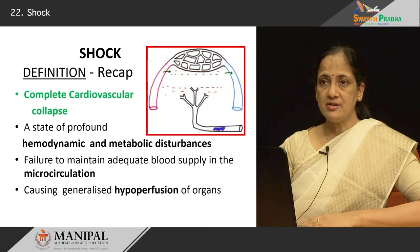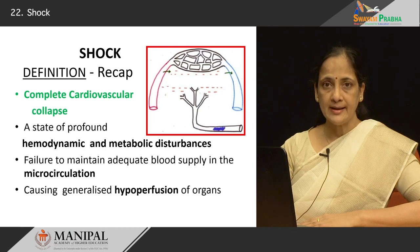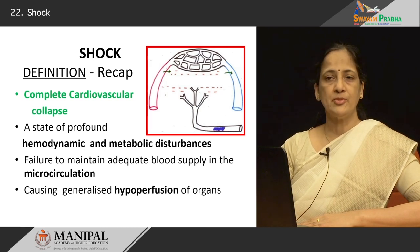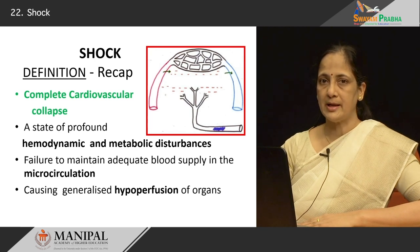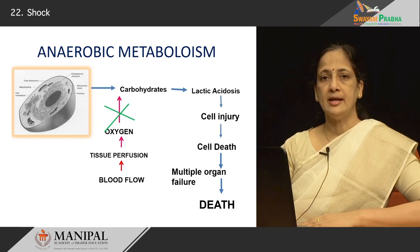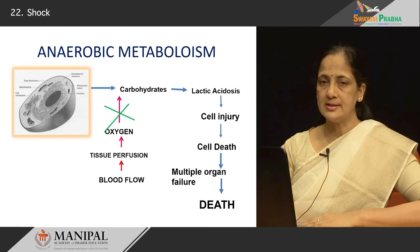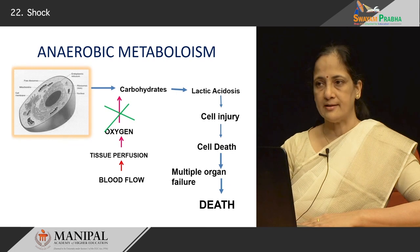Let us recap the definition of shock. There is complete cardiovascular collapse — it is generalized and diffuse — wherein there is profound hemodynamic and metabolic disturbances characterized by a failure to maintain blood flow in the microcirculation, resulting in generalized hypoperfusion of organs. Therefore, there is going to be involvement of a large number of organs, tissues, and cells. With these organs being affected, it will result in multi-organ failure and finally be fatal to the patient.